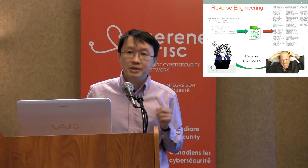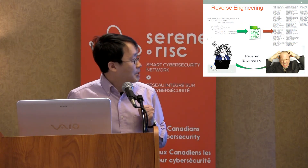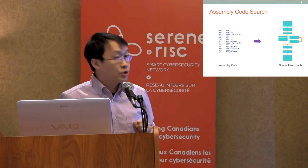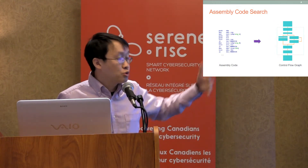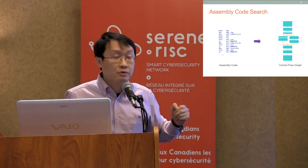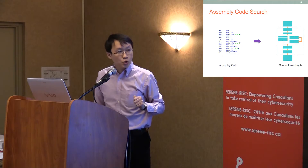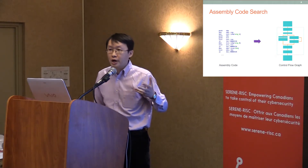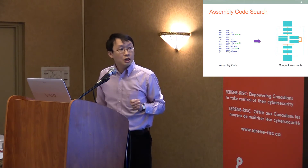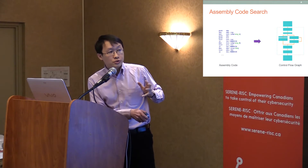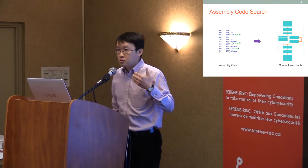Given a piece of assembly code function, what they usually do is transform the function into a control flow graph. A control flow graph is a sequence of basic blocks — you can consider basic blocks as a logical segmentation of the assembly code. The control flow graph also provides an overview of the logic of that function, so you can see if this is a conditional statement or a loop.